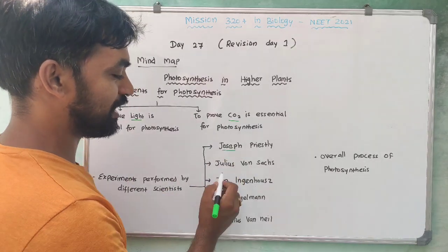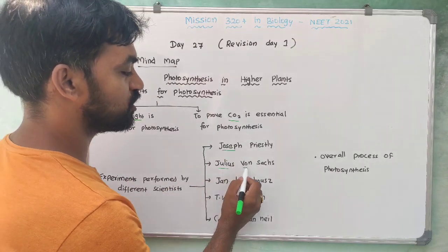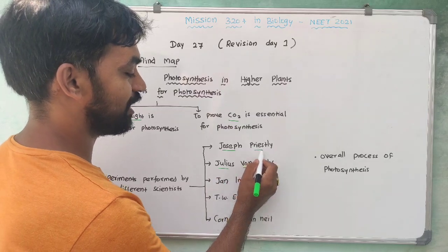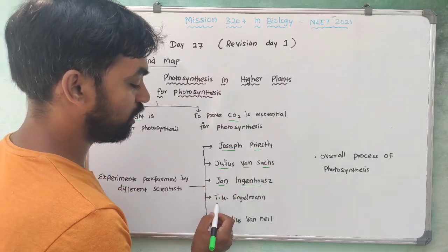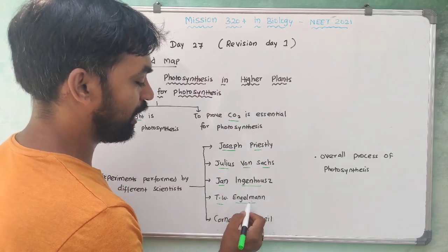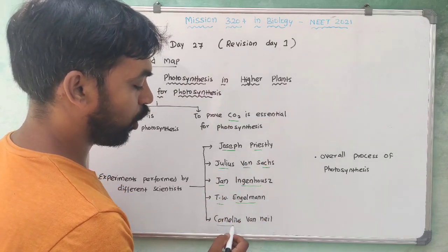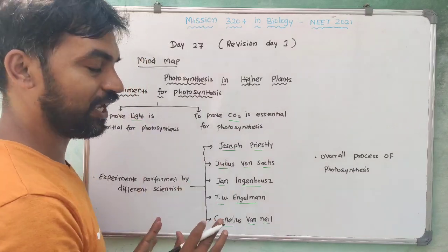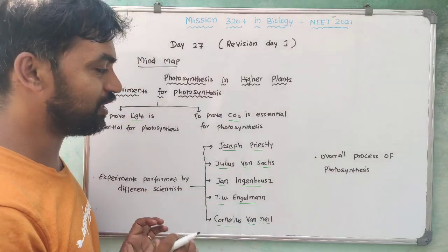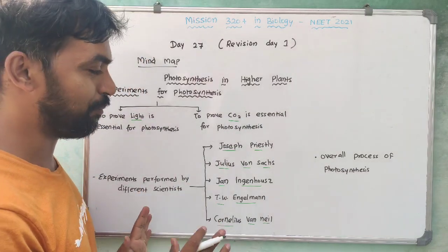The five scientists are: Joseph Priestley, Julian Swan Sacks, Jan Ingenhaus, T.W. Engelman, and Collier S. Van Neel. We will explain each one — this is the Mind Map.